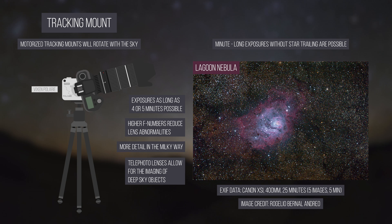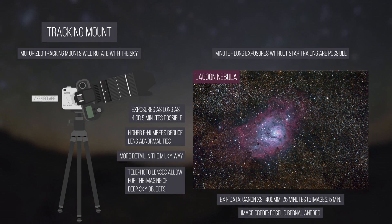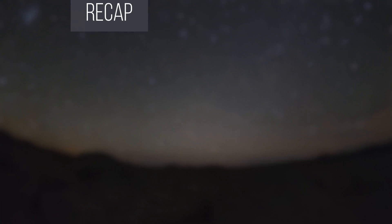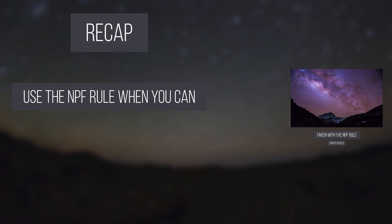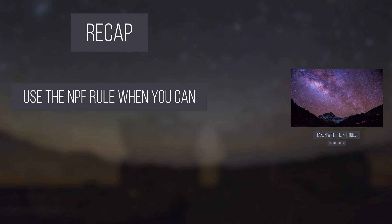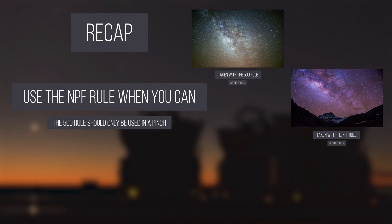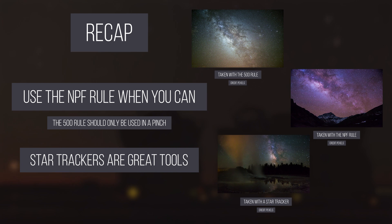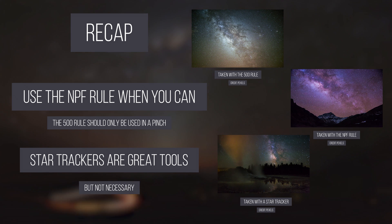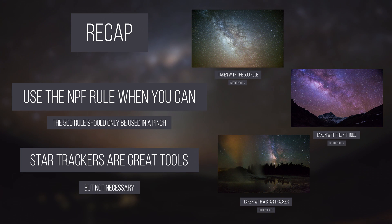Remember that in astrophotography, you are trying to capture as much light as possible, so always find your maximum shutter speed using the NPF rule, or if you need it in a pinch, the 500 rule. Star trackers are nice to have and can dramatically increase your maximum shutter speed, but are not needed whatsoever for beautiful images of our galaxy.